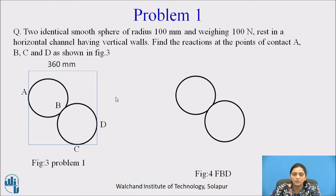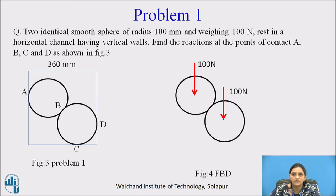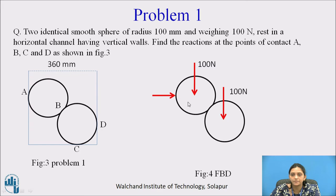Now we will draw the free body diagram of these two spheres. The self-weight of cylinder 1 is 100 Newton acting vertically downward. Self-weight of cylinder 2 is also 100 Newton — since they are identical, their weight and size are the same — and their self-weight acts at the center, vertically downward. At point A, the support is vertical, so after replacing it with the support reaction, the reaction is shown horizontally and named RA.